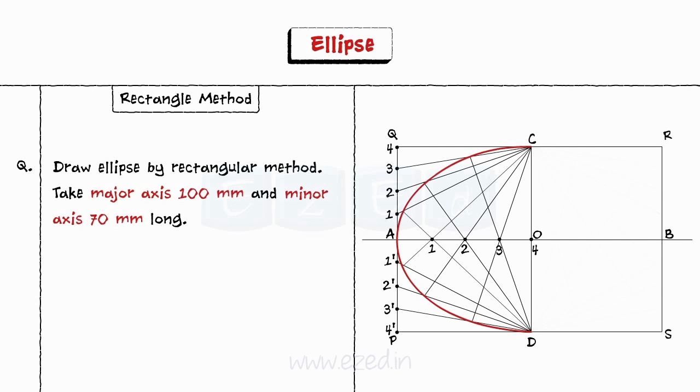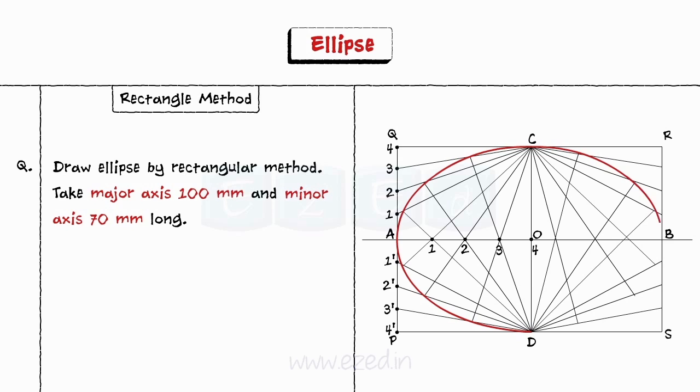Step 8. Repeat the above steps and draw the right half of the ellipse symmetrical to the left half. This is the required ellipse by rectangle method.